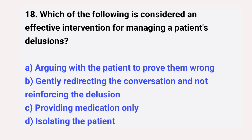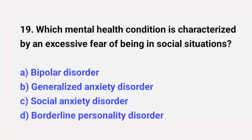Question number eighteen: which of the following is considered an effective intervention for managing a patient's delusion? The right answer is option B: gently redirecting the conversation and not reinforcing the delusion. Question number nineteen: which mental health condition is characterized by an excessive fear of being in social situations? The right answer is option C: social anxiety disorder.